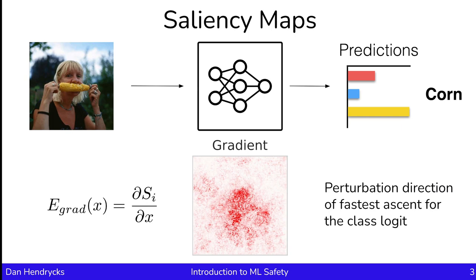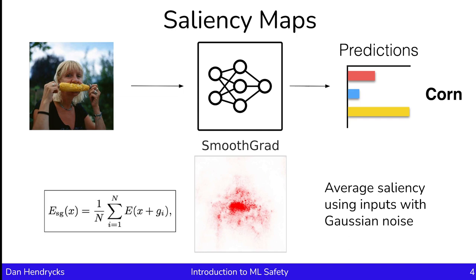So there's a class like corn, and we're going to find a perturbation that will increase the confidence in the class corn. Another saliency map is SmoothGrad. As we saw with the gradient saliency map, it looked somewhat noisy. SmoothGrad tries to address that by aggregating saliency maps across lots of different inputs. It will take N different inputs, each being the original image perturbed by a different random Gaussian noise vector. The ultimate saliency map is what's salient across all of those different noisy images, and the resulting saliency map is a lot smoother and looks a lot less noisy.